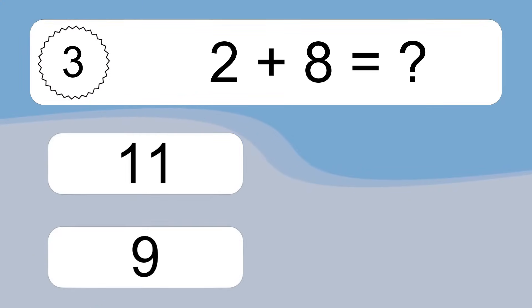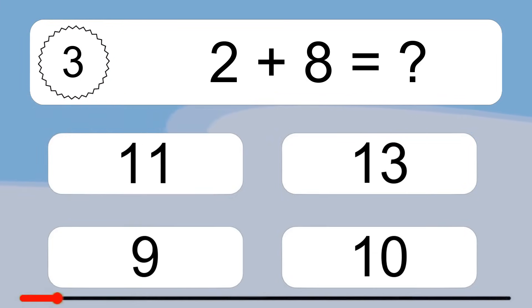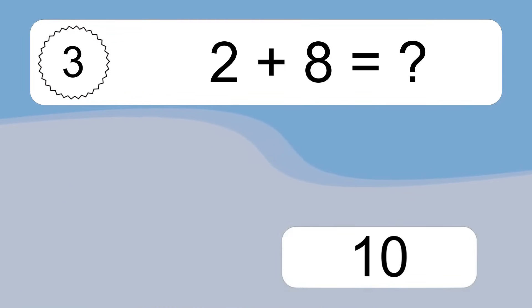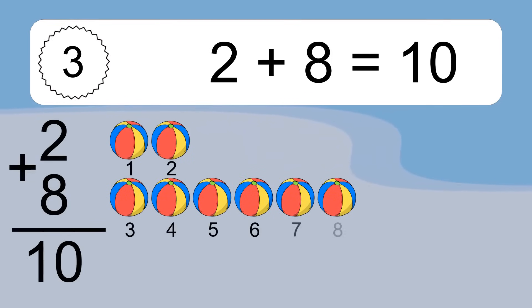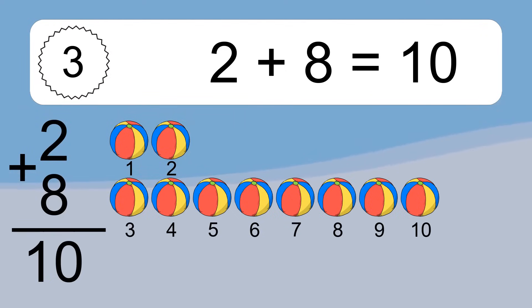2 plus 8 equals what? 2 plus 8 equals 10. Let's count it: 1, 2, 3, 4, 5, 6, 7, 8, 9, 10.